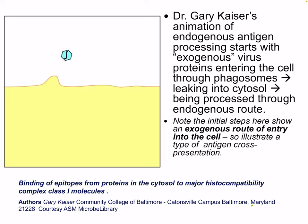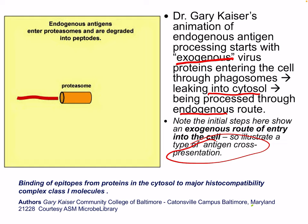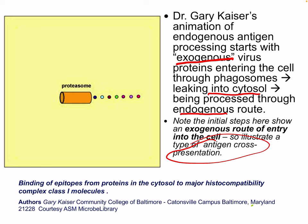Here's an animation of endogenous antigen processing, starting with exogenous virus proteins entering the cell through the phagosome, leaking into the cytosol, and being processed through the endogenous route. Endogenous antigens enter the proteasome and are degraded into peptides — we can see the proteasome degrading the antigen. Peptides then enter the ER through TAP transporters.